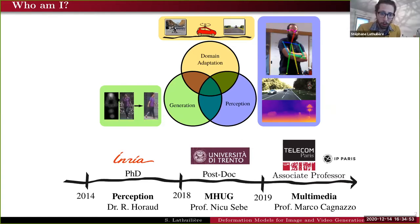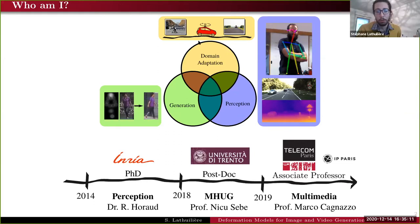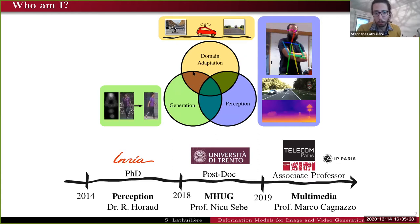Then I started to work on other tasks like generation, where the goal is to train deep neural networks not to classify or analyze images or videos but to re-generate images and videos. And recently I started to work on adaptation — domain adaptation — which consists in adapting a neural network trained on a source dataset to work in a slightly different environment. Today I'm going to speak mostly about the generation part.